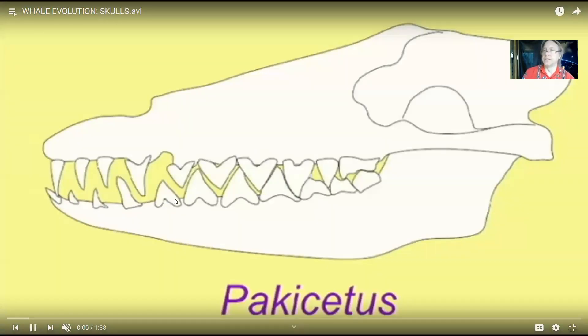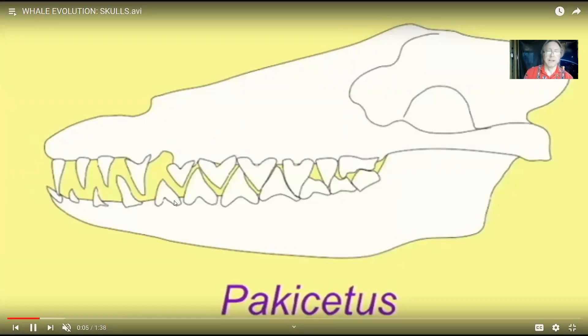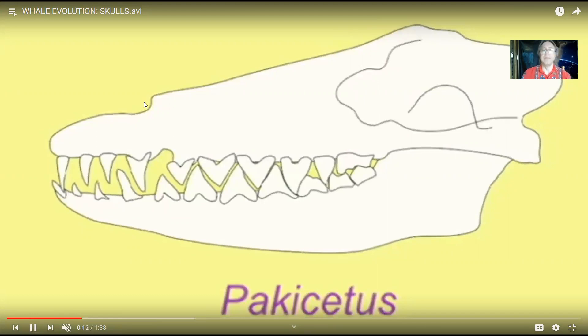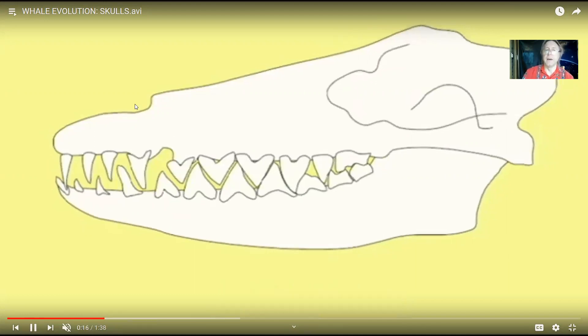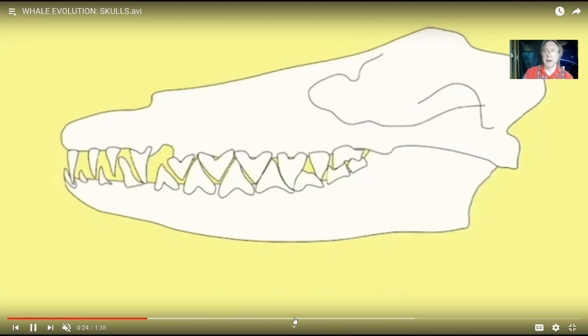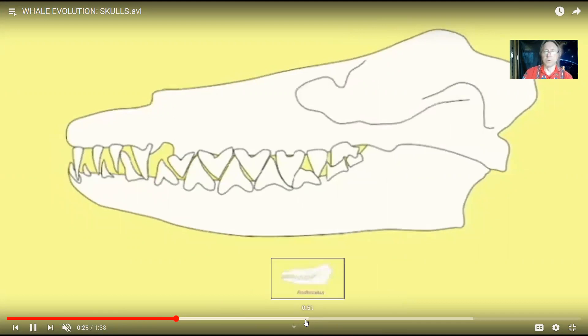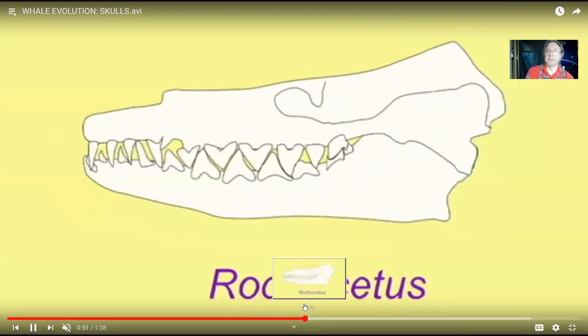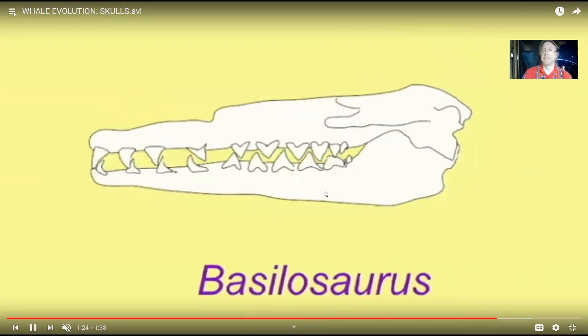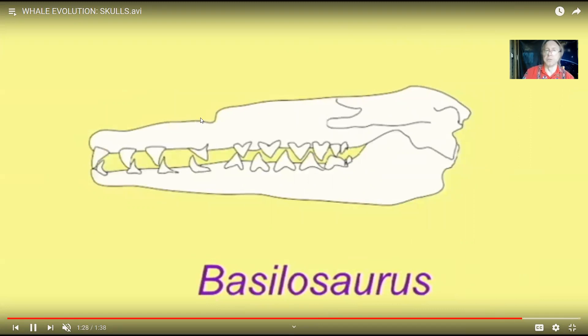Not only were the limbs gradually adapting to life in the water, but so were the skulls. All of these early whales were predators, so none of them had the baleen that most large whales have today. Their teeth were adapted for grabbing fish and other marine life. The nostrils gradually moved back in position, and the skulls became more elongated. Progressing from early forms like Ambulocetus to Rhodocetus, notice the nostrils moved back, and on to Basilosaurus, the skull is larger and more elongated, with the nostril moving further back.